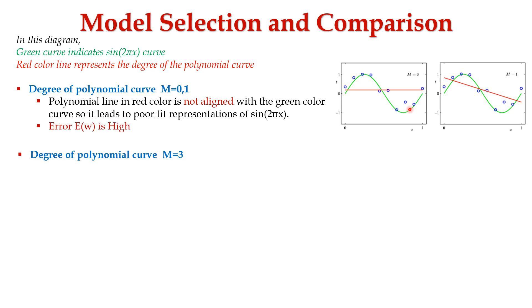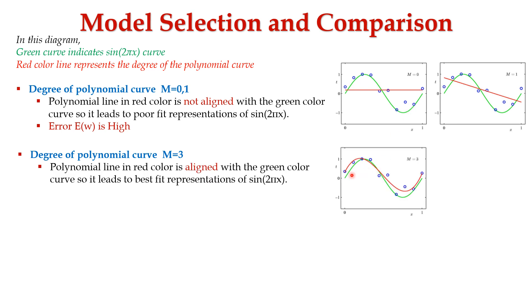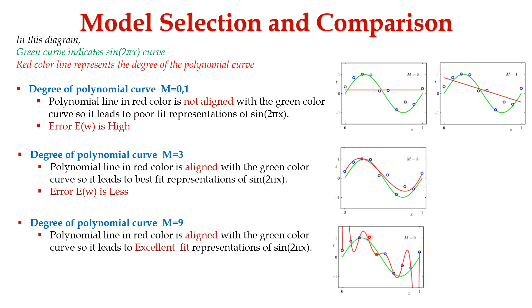Next, let's consider the degree of the polynomial curve as m=3. Here, the polynomial line is aligned with the curve, leading to a best-fit representation of sin(2πx). The error is small. Next, let's consider the degree of the polynomial curve m=9. Here, the polynomial line is aligned with the green color curve, leading to an excellent fit representation of sin(2πx). The error is equal to 0.